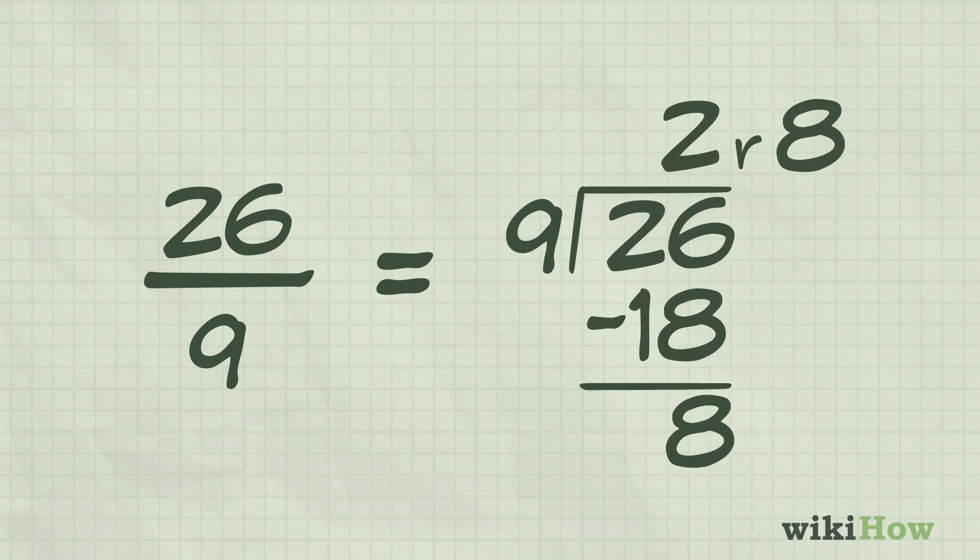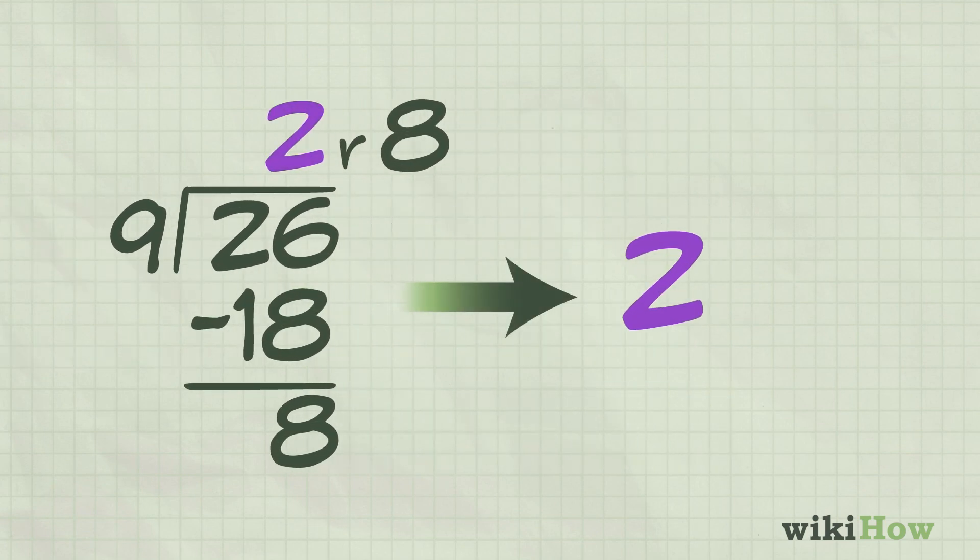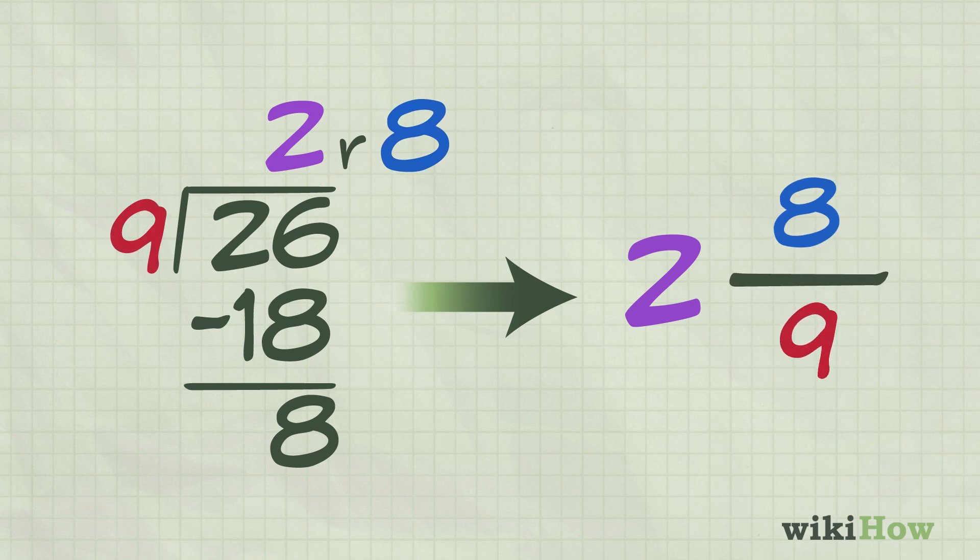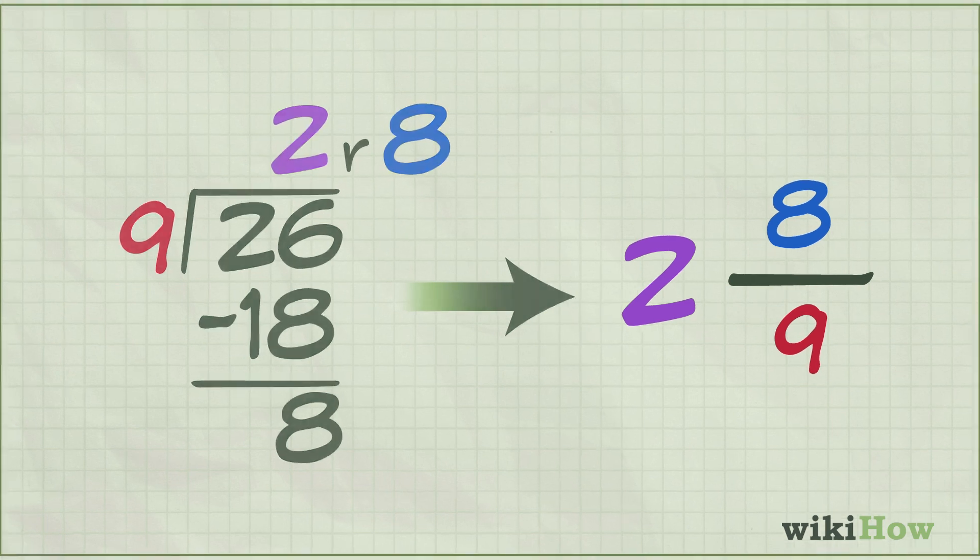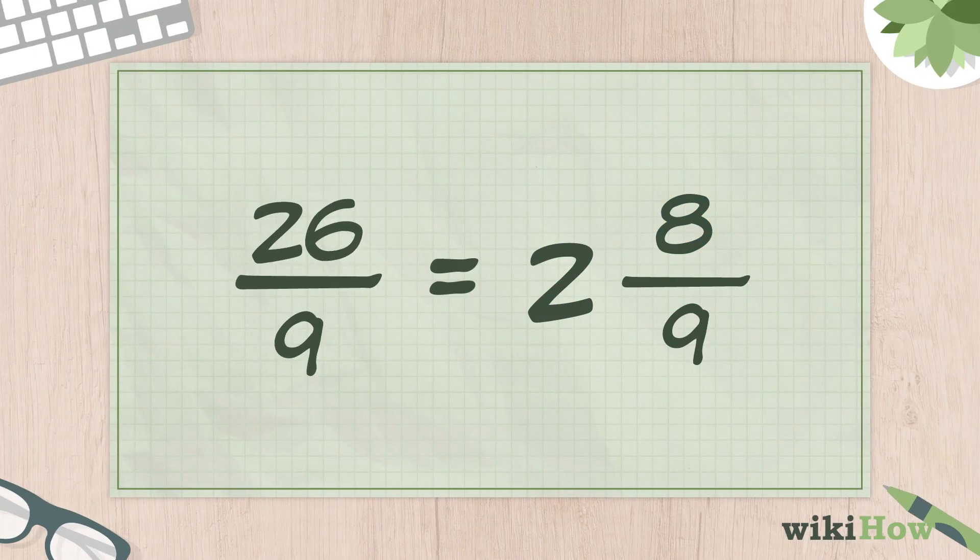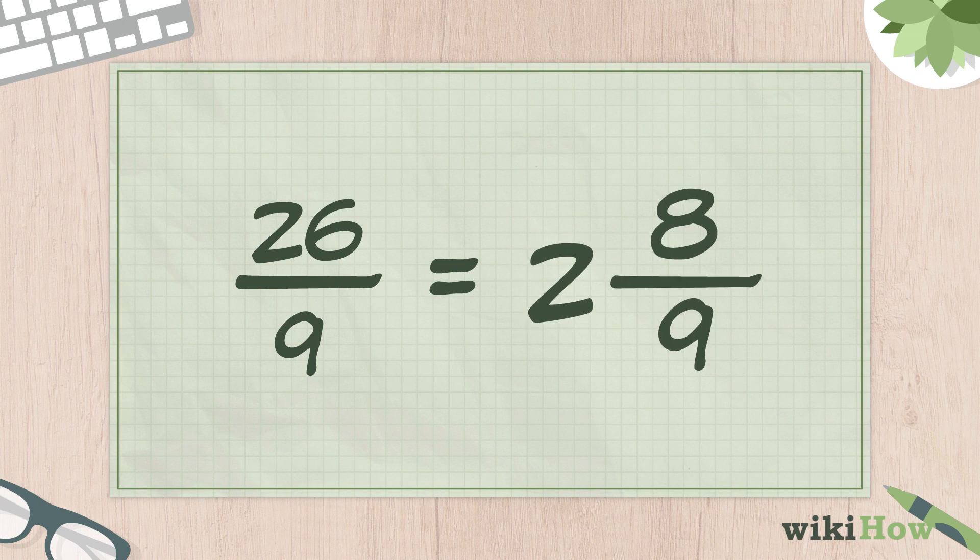Now convert the fraction back to a mixed number by dividing the numerator by the denominator. The quotient is the whole number, while the remainder is the new numerator. 26 divided by 9 equals 2 with a remainder of 8. So 26 over 9 becomes the mixed fraction, 2 and 8 ninths.